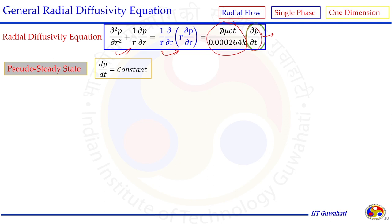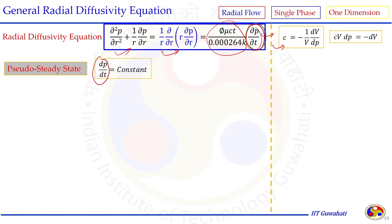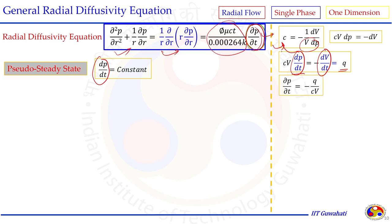Now for the pseudo steady state condition: in pseudo steady state, the change in pressure with respect to time at a particular location is constant. We can get an expression for this constant term in measurable quantities using the compressibility definition, rearranging to get the change in volume with respect to time — which is equivalent to flow rate. So we now have the expression for flow rate Q in terms of ∂p/∂t.